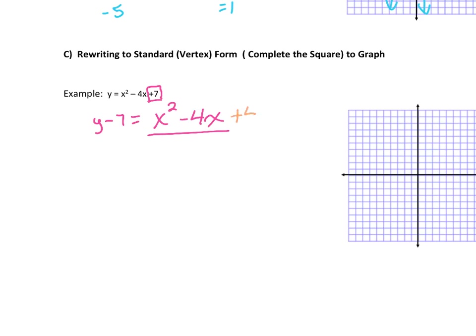Let's do a different color here, let's add four to both sides. So then we can rewrite this, now we can combine those together, we get -3 equals (x - 2)², and then when we add the three back over.